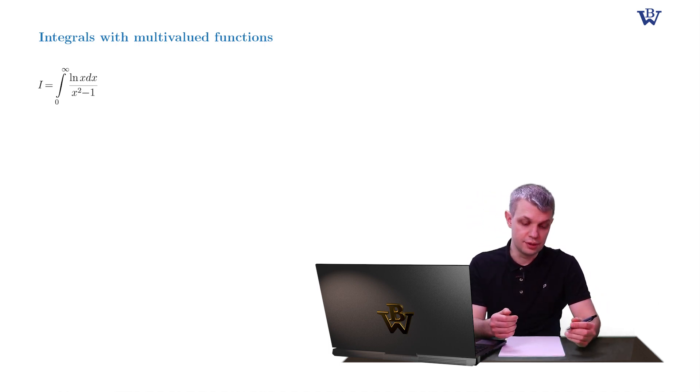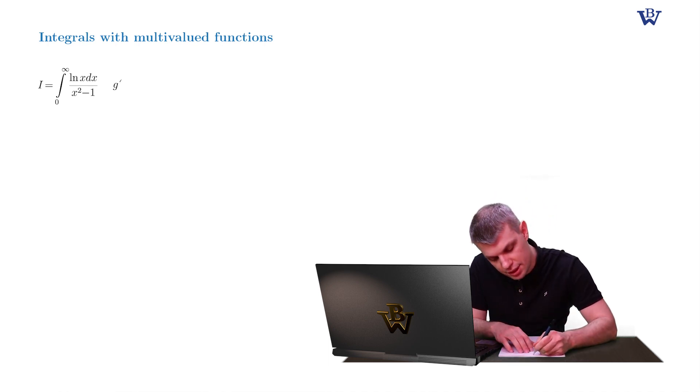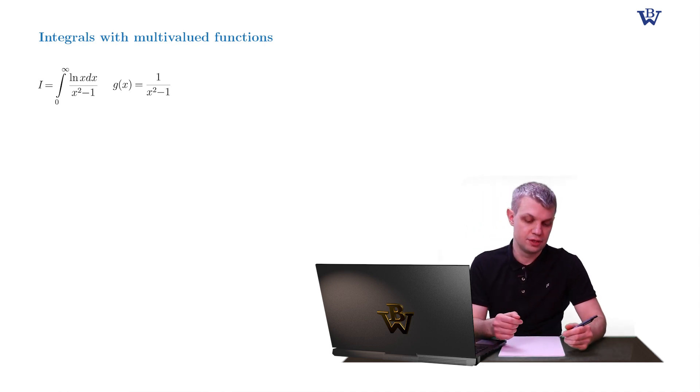A quick look at the integrand shows us that it has many similarities with the previous example. In particular, its single-valued part, let's call it g of x equals 1 over x squared minus 1, is an even function of x. And this immediately tells us a possible deformation of the contour.